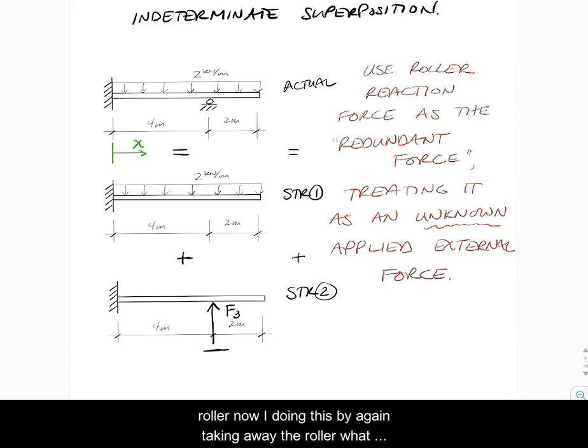Now by doing this, by again taking away the roller, what I've allowed to happen in the beam are deflections - and more specifically right at that roller. In the actual beam, I know that v at four has to equal zero.